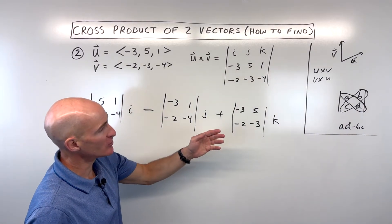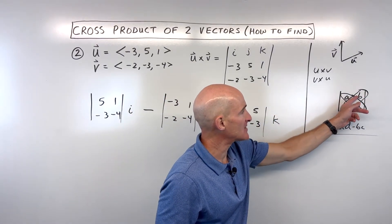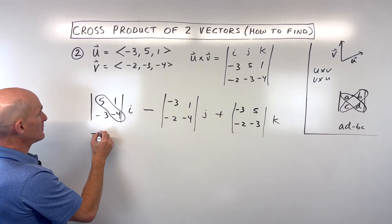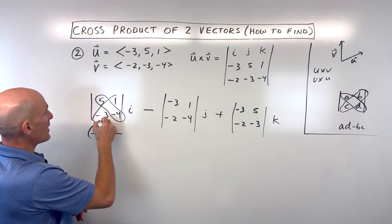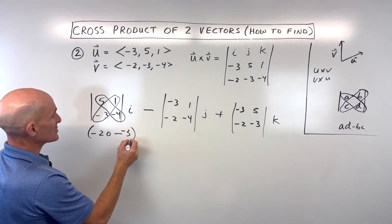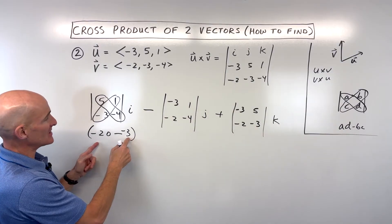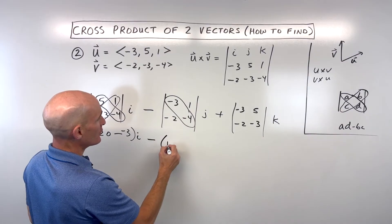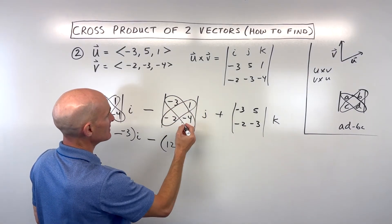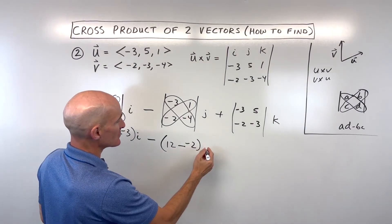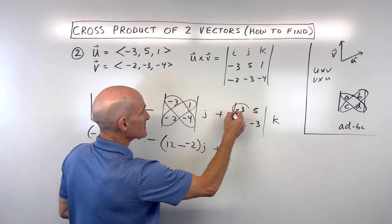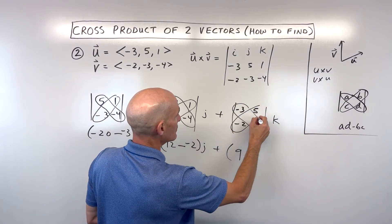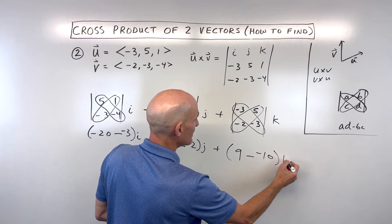Now we take the determinant — remember it's ad minus bc. We've got negative twenty minus negative three, so be careful with the signs — i. Minus: negative three times negative four is twelve, minus negative two times one is negative two — j. Plus this diagonal: negative three times negative three is nine, minus five times negative two is negative ten — k.